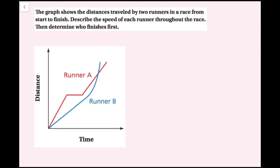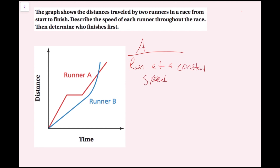For this example, the graph shows the distances traveled by two runners in a race from start to finish. Describe the speed of each runner throughout the race, then determine who finishes first. For Runner A: they start at zero and increase distance at a constant speed — this is a straight line. Then their distance doesn't change at all, meaning they stopped. Then they pick up speed again at a constant rate until they finish. So Runner A runs at a constant speed, stops for a period of time, then continues running at a constant speed until the finish.